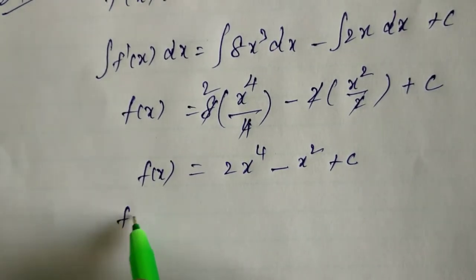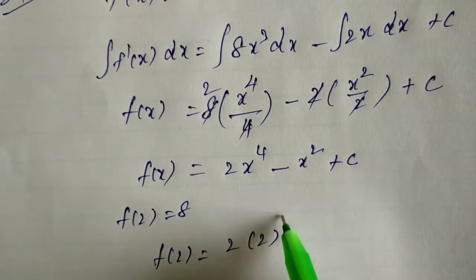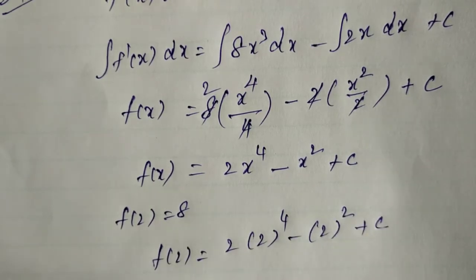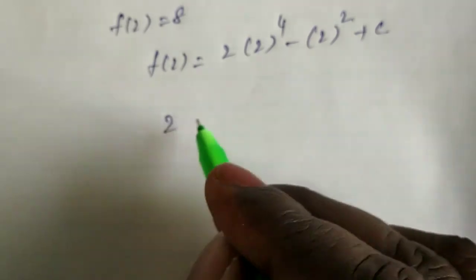Now we apply the given condition: f(2) = 8. So substituting x = 2: 2(2)⁴ minus (2)² plus C equals 8.